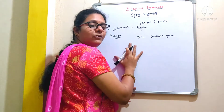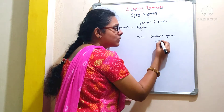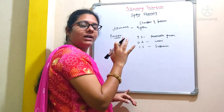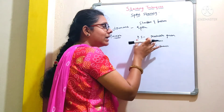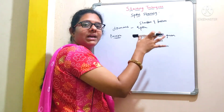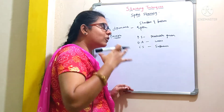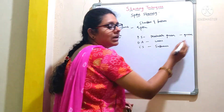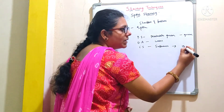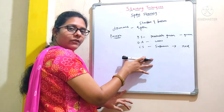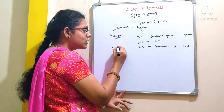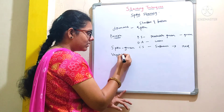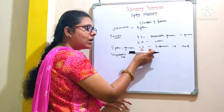Coming to the principle: here we use malachite green as a primary stain, water as a decolorizing agent, and safranin as the counter stain. During the procedure, after preparation of a smear, we initially add the primary stain malachite green and apply heat. The heat forces the primary stain to enter into the spore of a bacteria, so spores appear green in color. Whereas vegetative cells take up the counter stain and appear red in color.